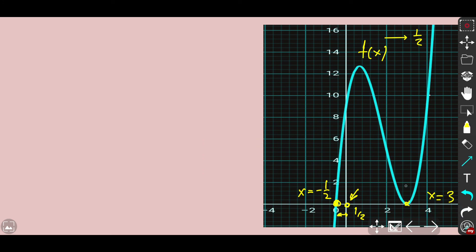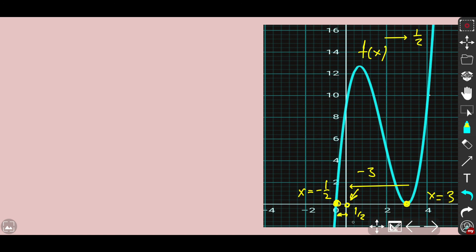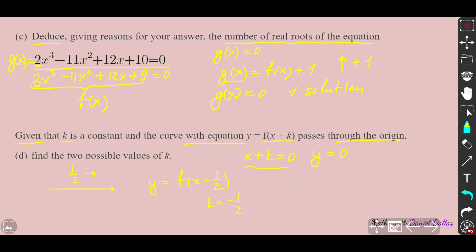The other option is to shift the graph three units to the left so the root at x = 3 maps to the origin. A shift left by 3 means the argument becomes x + 3, so k = 3. Therefore the two possible values of k are k = −1/2 and k = 3. The easiest approach is to visualize the graph. Hope you liked that — don't forget to subscribe if you're new here. That was Daniel Taus, see you next time!